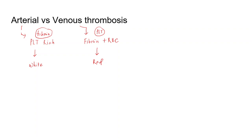Because arterial thrombosis is platelet-rich, in cases of arterial thrombosis we prefer giving antiplatelet drugs rather than anticoagulants. Antiplatelet drugs are preferred in cases of arterial thrombosis like MI and stroke. In cases of venous thrombosis such as deep vein thrombosis and pulmonary embolism, we prefer giving anticoagulants, and antiplatelet drugs don't have much role there.